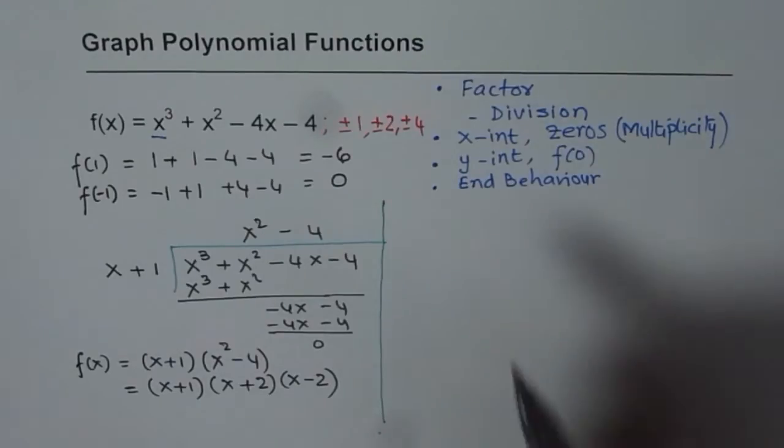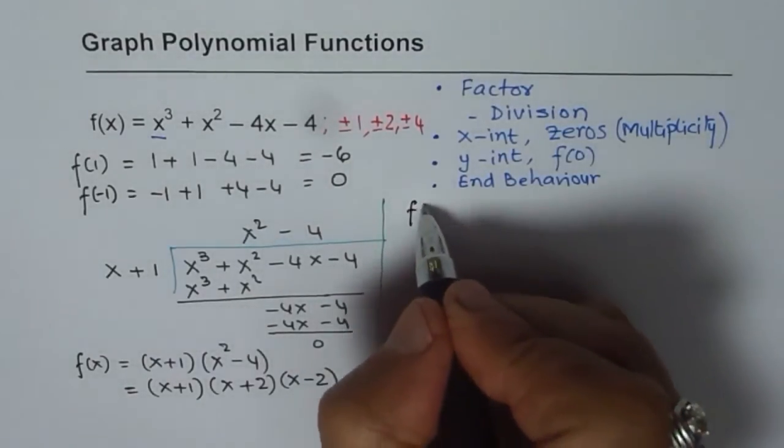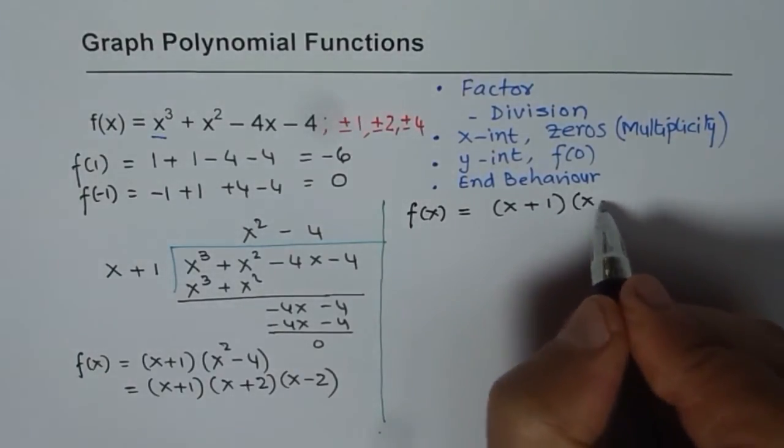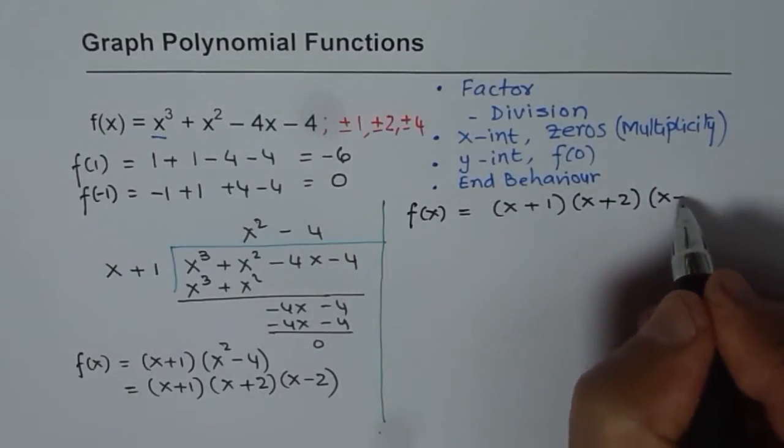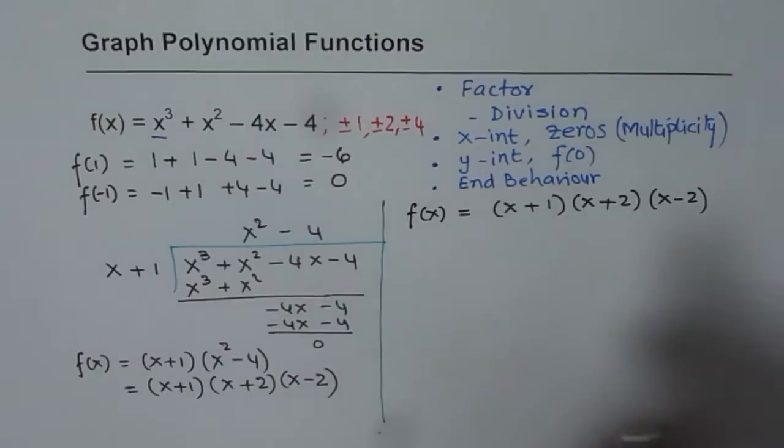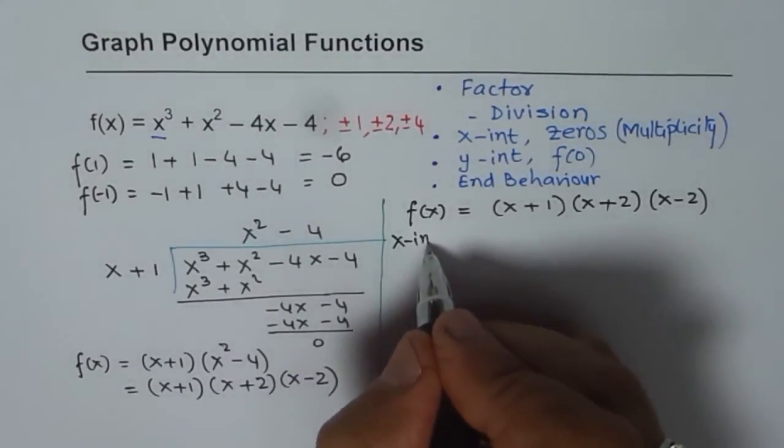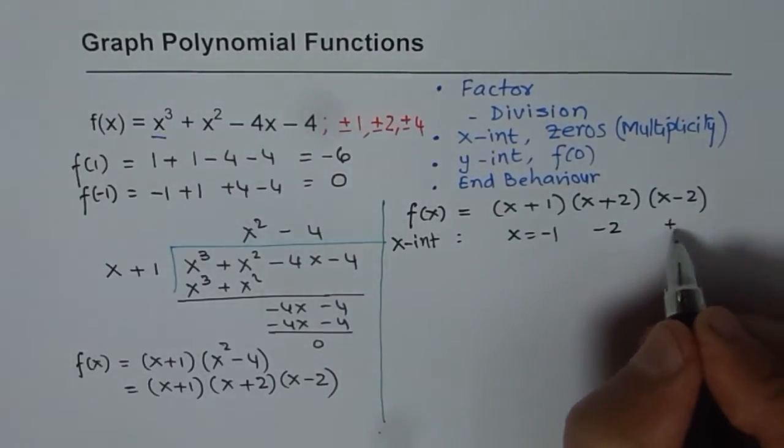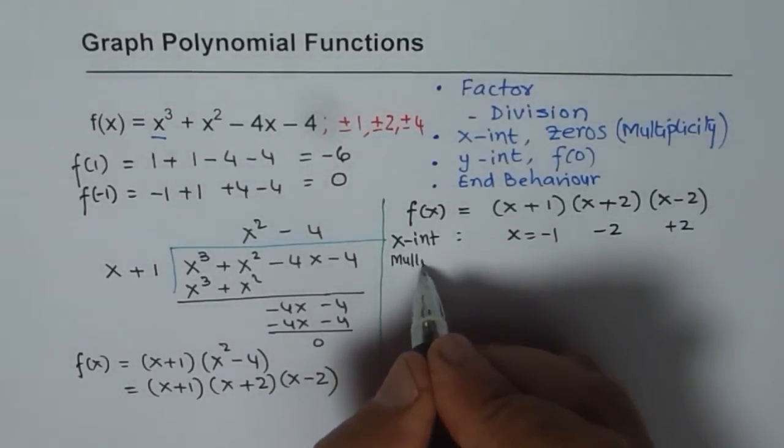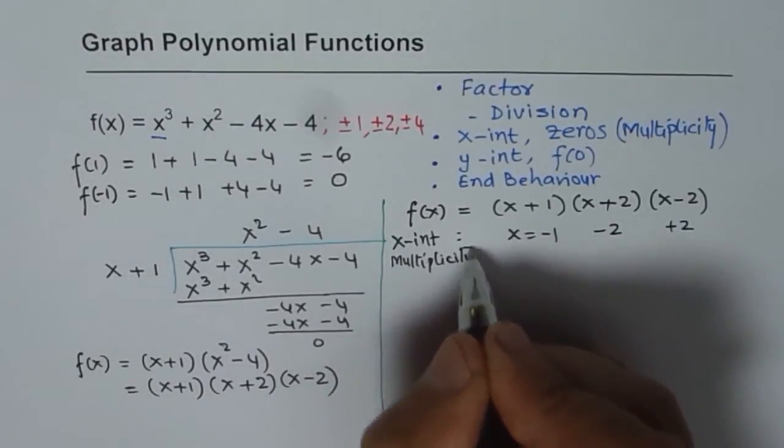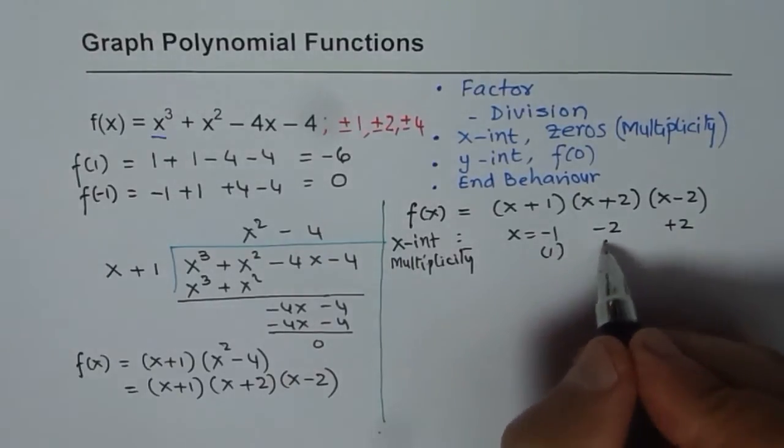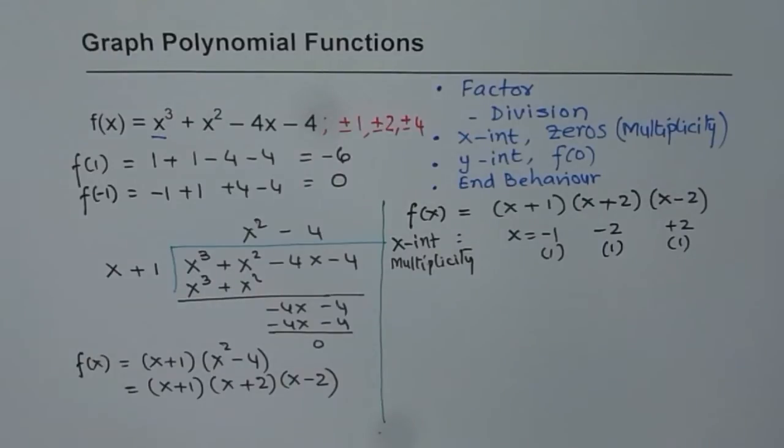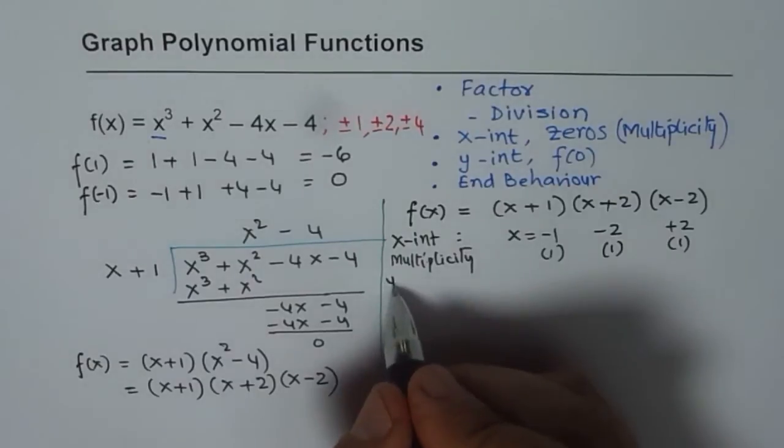So let's begin. We already have our function. Let me write the function once again here: f(x) = (x + 1)(x + 2)(x - 2). So what are the x-intercepts? x-intercepts are at x equals minus 1, minus 2, and plus 2. Now what is the multiplicity? Multiplicity is linear, so it's 1 here, 1 here, and 1 here. That means it will cross the x-axis like a straight line. Now let me find y-intercepts.